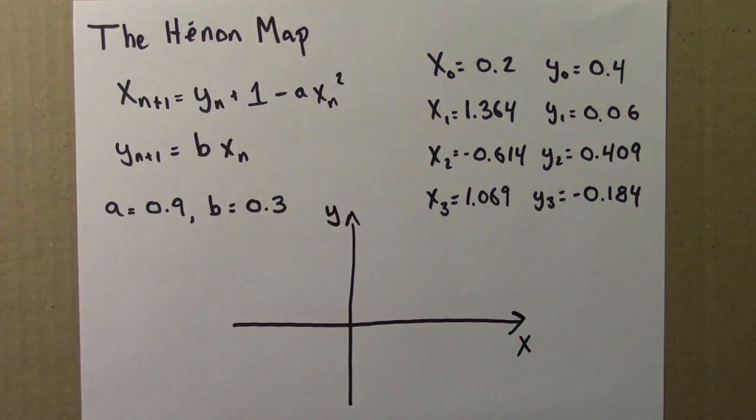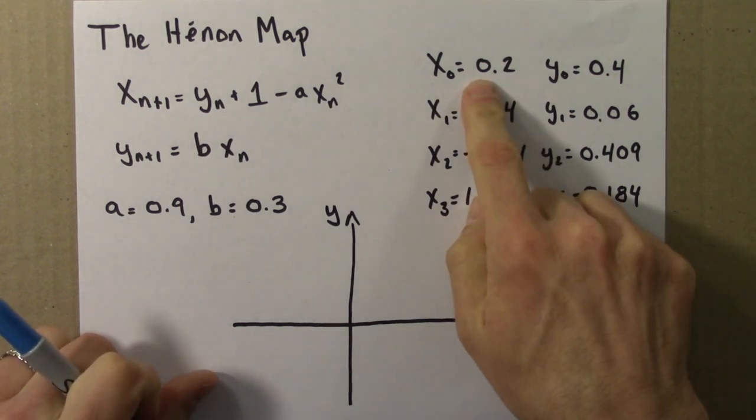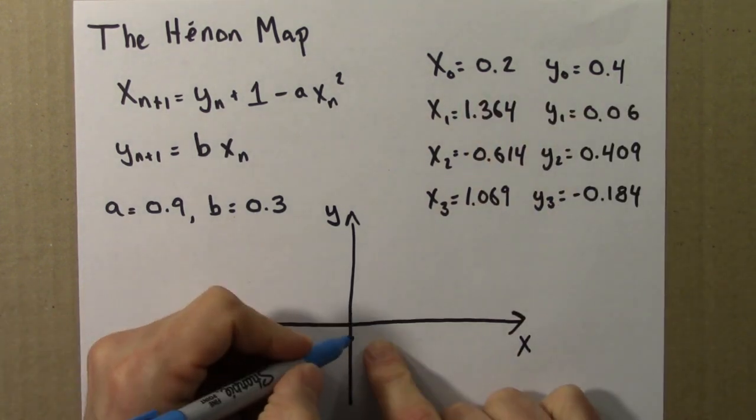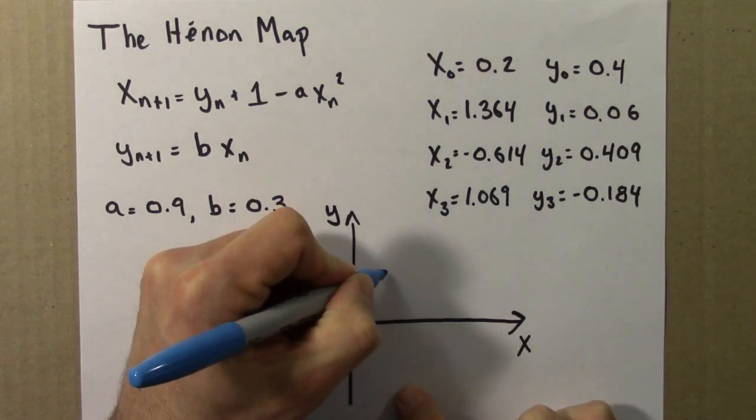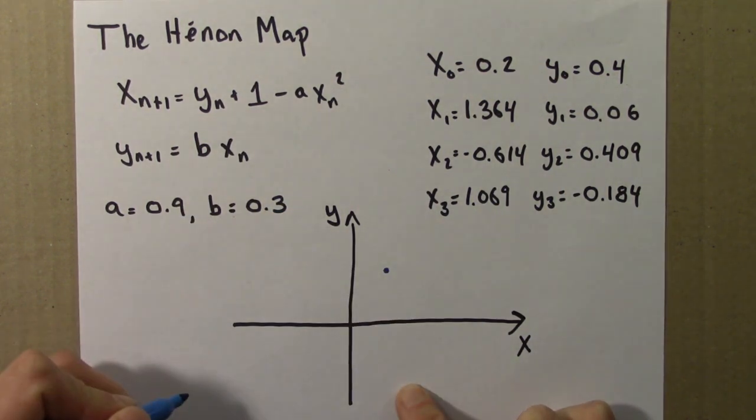So I'll just sketch this and then we'll look at it on the computer. So the first point, x is 0.2, y is 0.4. So I might go over 2, up 4, maybe something roughly like that.